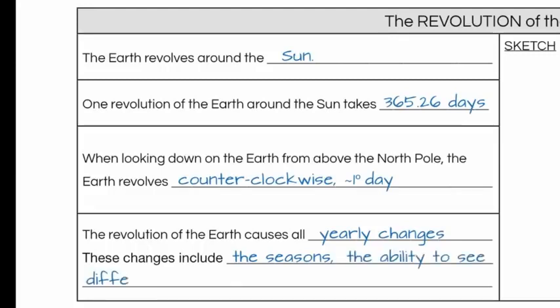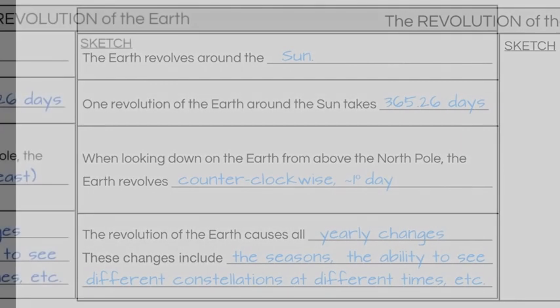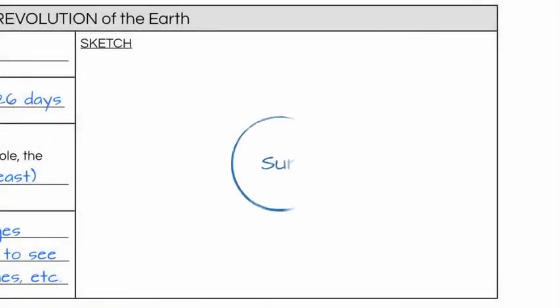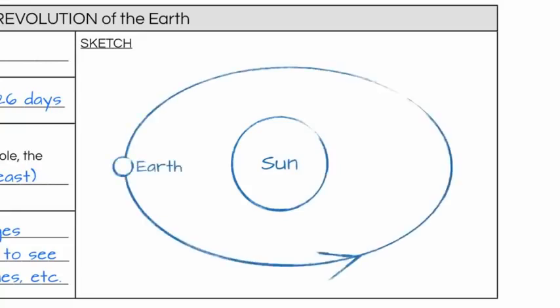Another interesting change is the ability to see different constellations of stars at different times. If you go outside from New York in the winter, you will see the constellation Orion. But in the summer, it's not visible as the earth has moved. Let's draw a quick sketch. With the sun in the center, and the earth on the side, and the earth's orbit. Be sure to include the arrow showing that counter-clockwise motion.